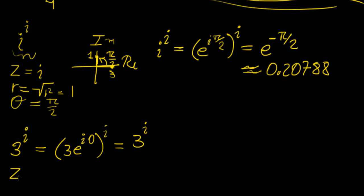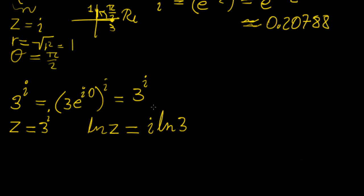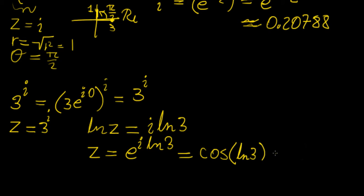What else can we do? Let z = 3^i. Let's take the natural log of both sides: ln z = i · ln 3. Now let's take exponentials of both sides, leaving it as z = e^(i ln 3). We can use Euler's identity: that's cosine(ln 3) + i · sine(ln 3). That's a really nice trick you can apply that you may not have known about.